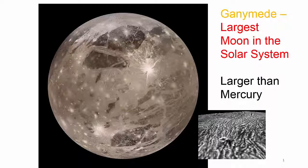Ganymede is the largest moon in the solar system, so it falls into the large category. But it's actually bigger than Mercury.